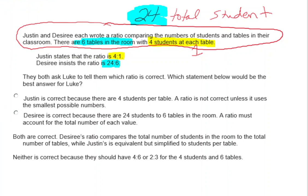There are lots of different ways to read and interpret a problem and come up with a ratio. Four students per table (4:1) is a ratio itself. 24 students for 6 tables is an equivalent ratio — just not in simplest form. They're both correct: Desiree's gives total students to total tables, while Justin's is the simplified equivalent showing students per table.